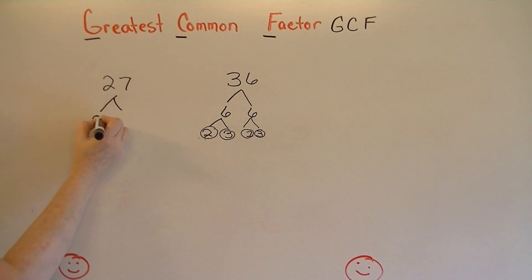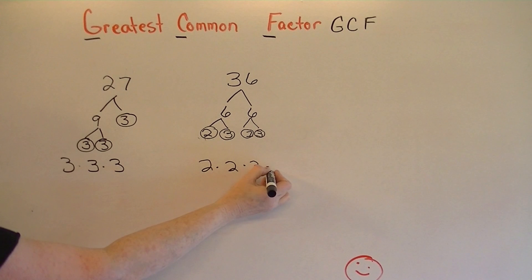And 27 is 9 times 3. 9 is composite, and it factors down into 3 and 3 again. So all the prime factors of 27 are 3 times 3 times 3. And the prime factors of 36 are 2 times 2 times 3 times 3.